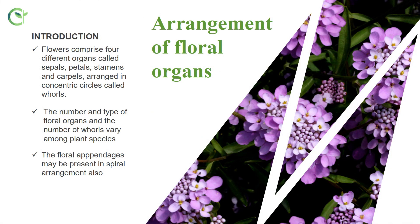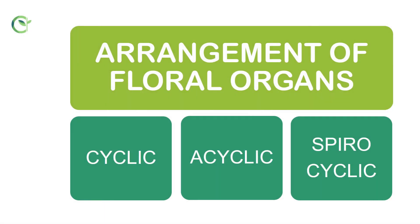There are different types of arrangement of floral organs in a flower. They may be present in a whorl form — arranged in concentric patterns — or in a spiral pattern. Based on these arrangements, floral organs are divided into three types: cyclic, acyclic, and spirocyclic.